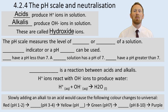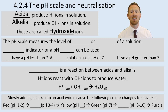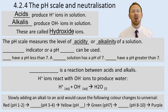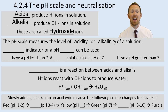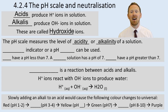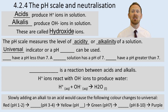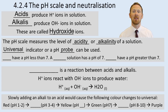The pH scale measures the level of acidity or alkalinity of a solution. If the pH is below 7, it's an acid; if it's above 7, it's an alkali. Universal indicator or a pH meter can be used to tell you the concentration of the acid or the alkali.